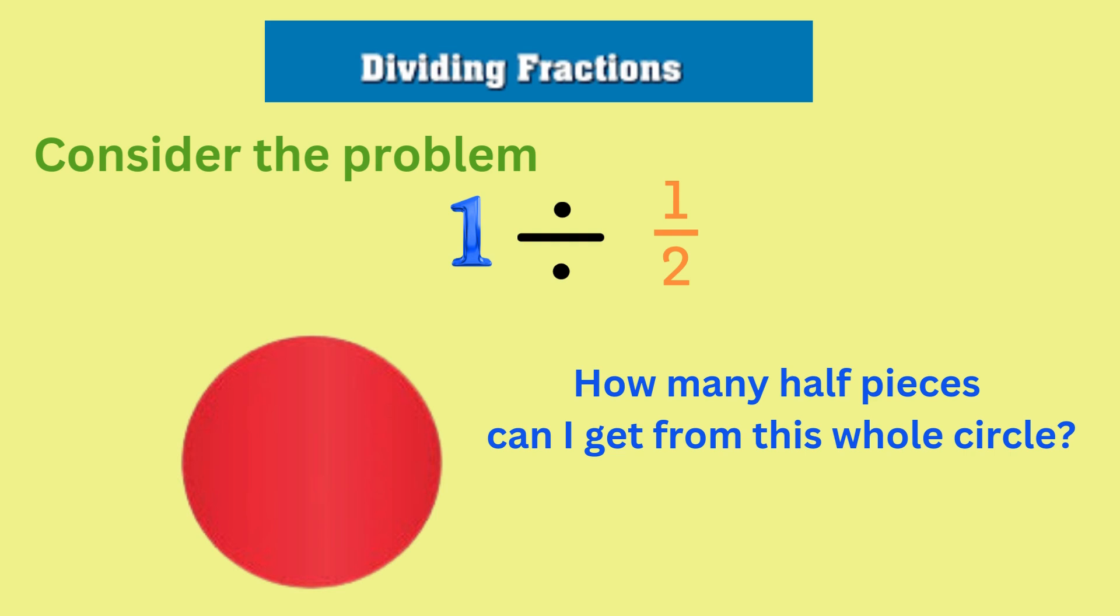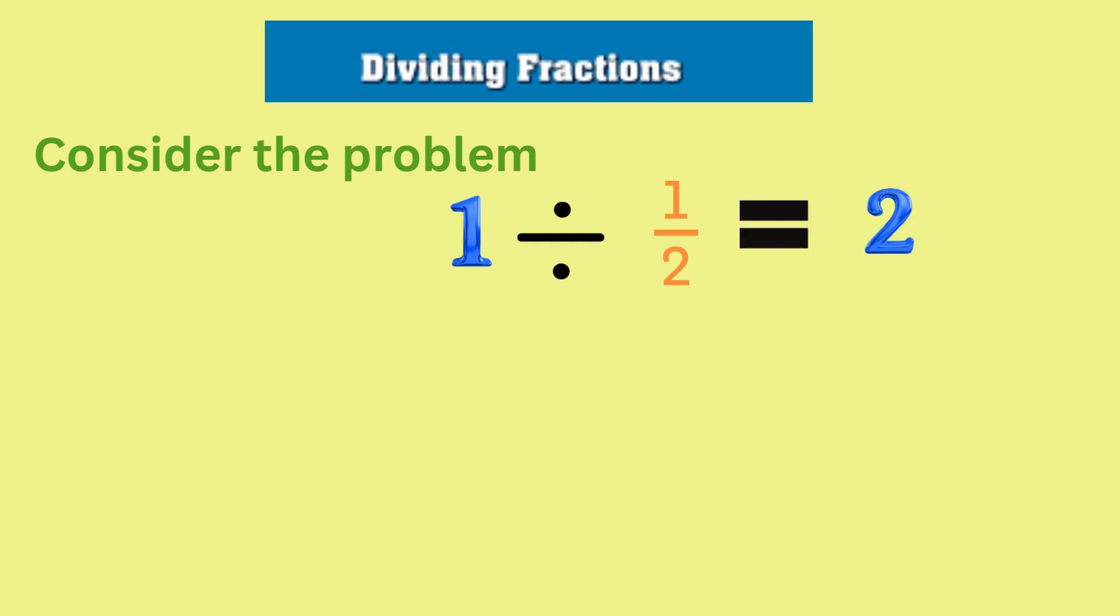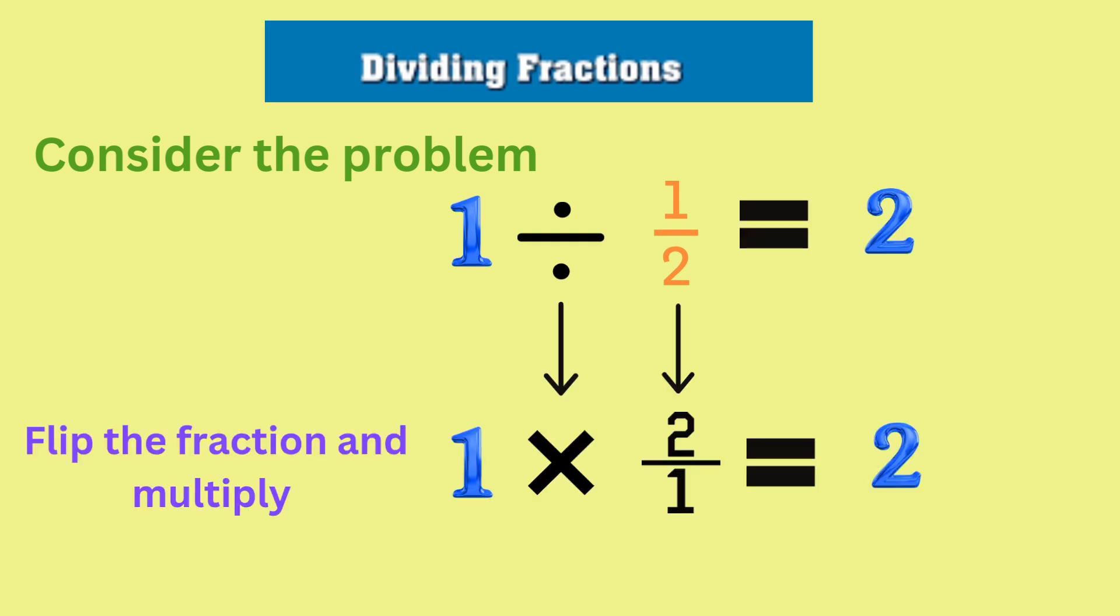Let's say you have a whole circle, and you want to divide it into halves. How many pieces would you get? As you can see, you will get two pieces. This means that one divided by half is two. Notice that you can reciprocate the fraction and multiply to get the number of half pieces.